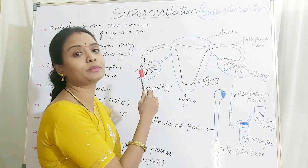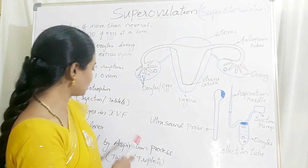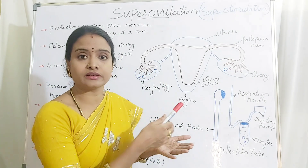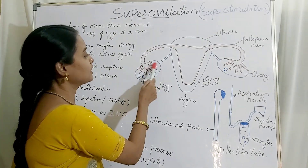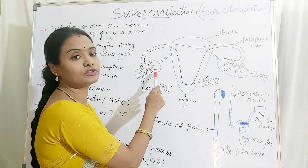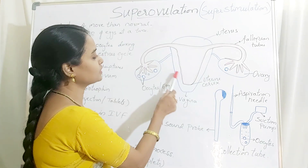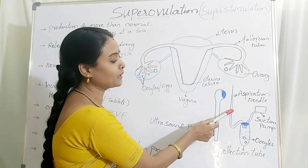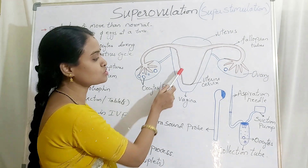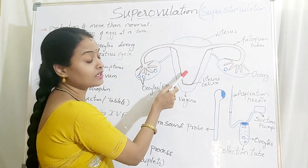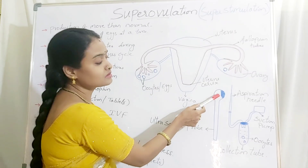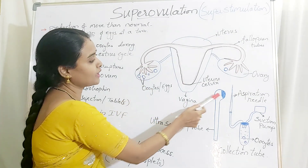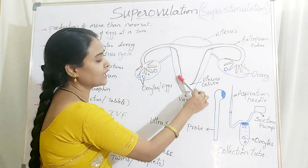These eggs have to be aspirated out in vitro. IVF is in vitro fertilization — you are allowing fertilization of the egg and sperm in lab conditions. You have to extract or aspirate these oocytes out of the body. Here this is the ultrasound probe and this is the aspiration needle, which are introduced into the vagina. By using the scanning probe, you focus on the fallopian tubes and oocytes, and using the aspiration needle you aspirate the oocytes.